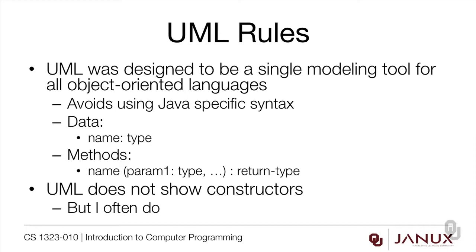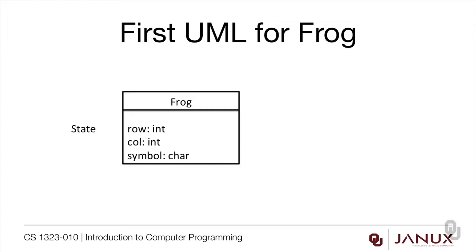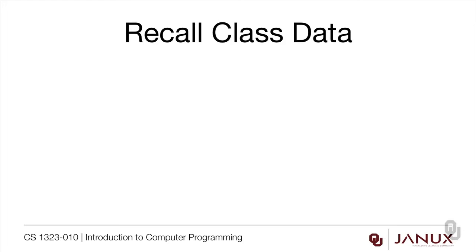Formally UML doesn't show constructors, but I usually do, because I've found that if I don't show constructors my students forget to write them. That's a problem because classes without constructors usually don't work the way they should. Here is our first UML for the Frog class. I have Frog as the class name on top, then the state: the row and column where the frog will be located, and the symbol used to describe the frog on the game board.